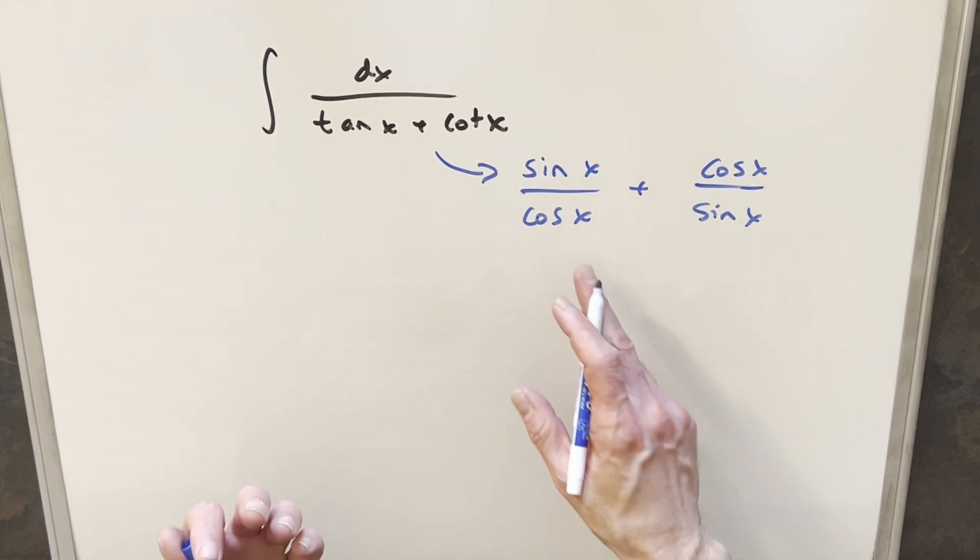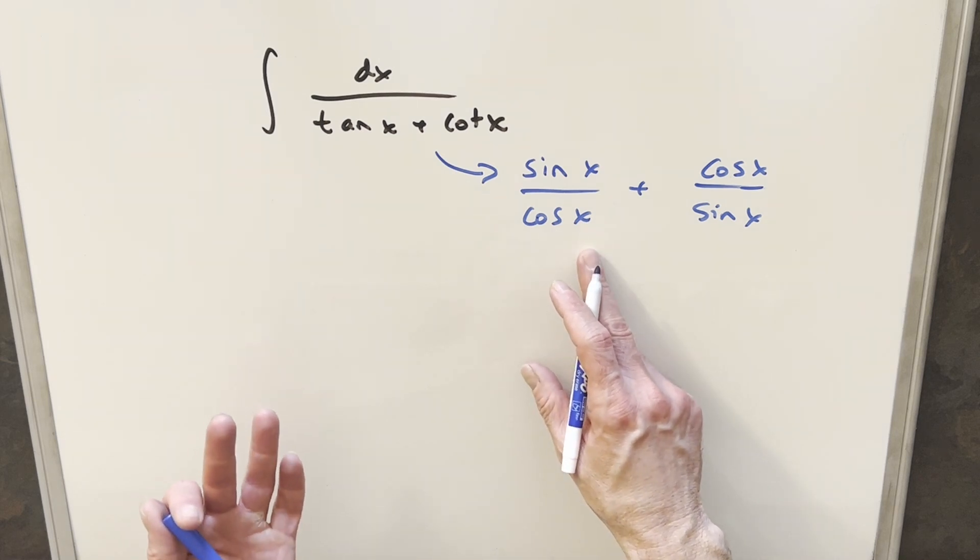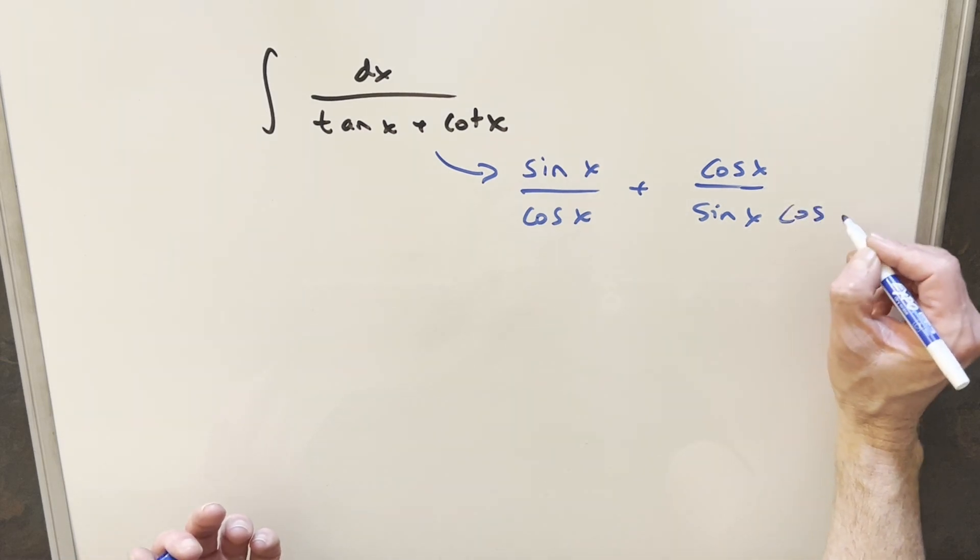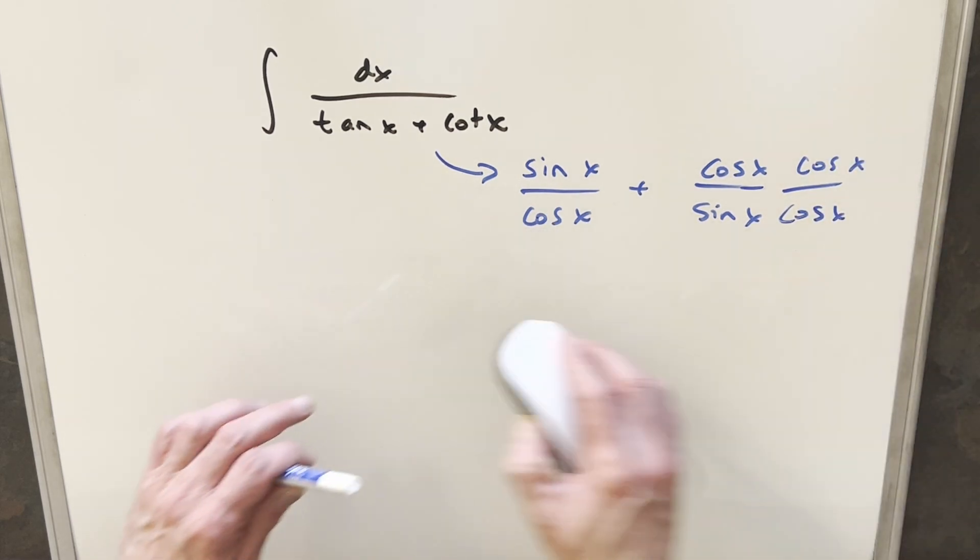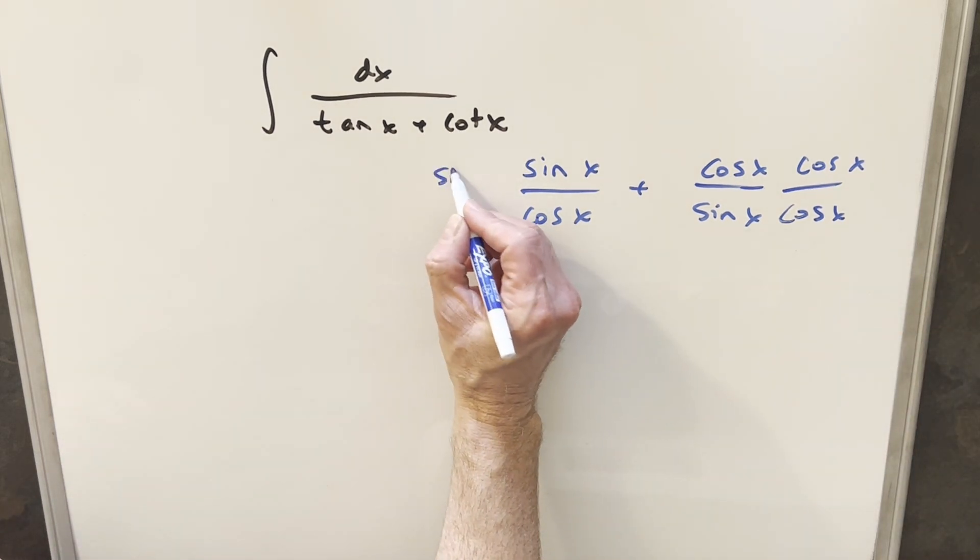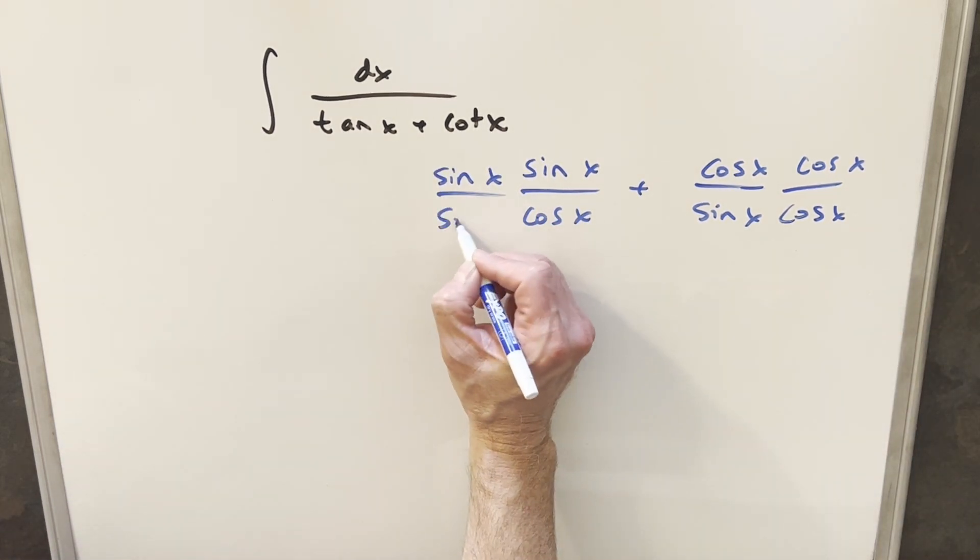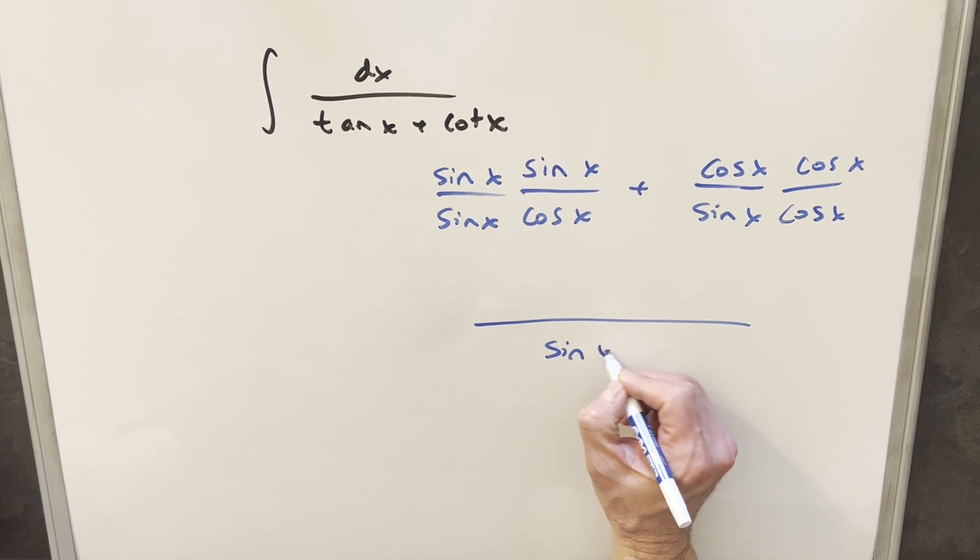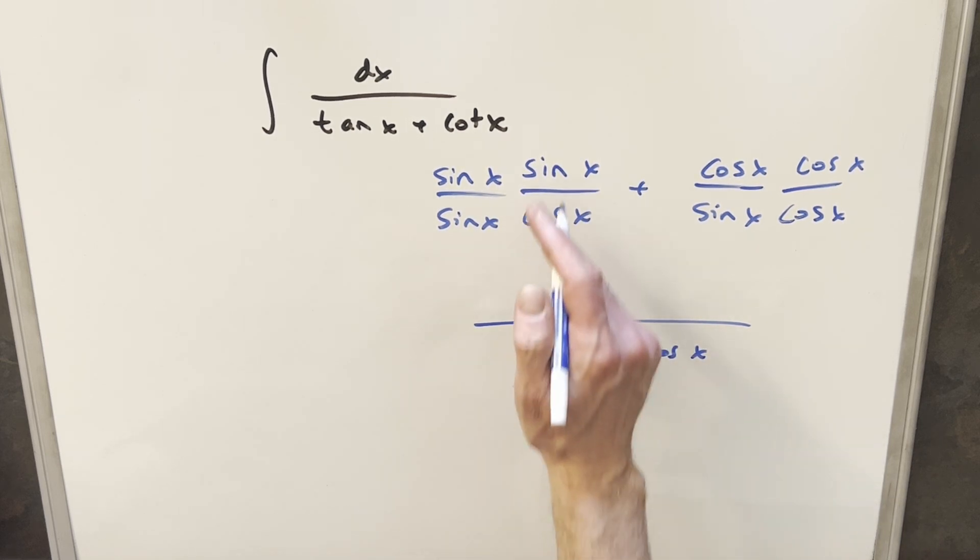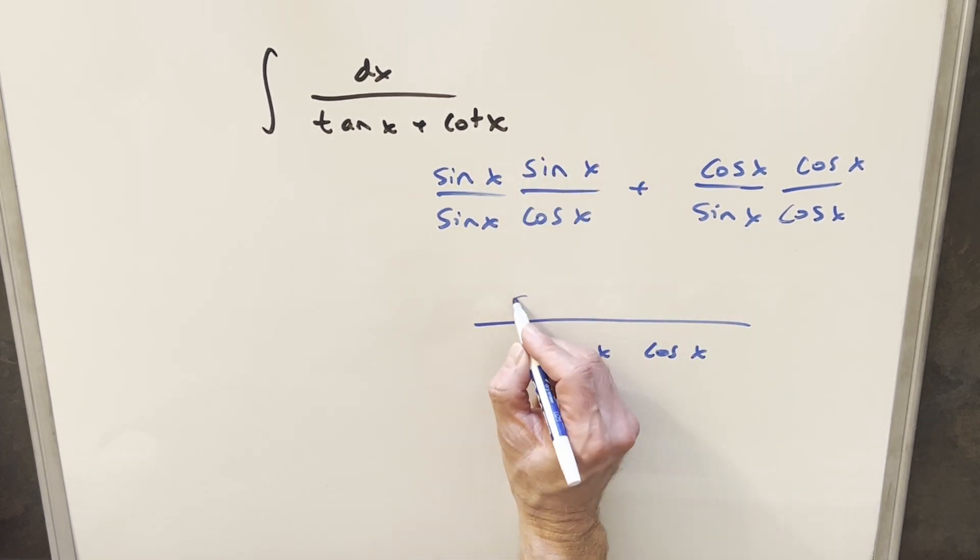But then from here, what I can do is get a common denominator of sine times cosine. So here, I'll multiply by cosine over cosine. And over here on the left, let me make a little space. So here, what I can do is multiply by sine x over sine x. So then now that we have a common denominator, let's put it all together with sine x, cosine x in the denominator. Here, for the first piece, we're going to have just sine squared.